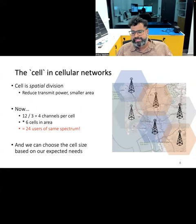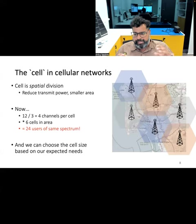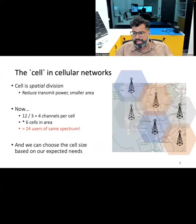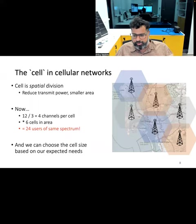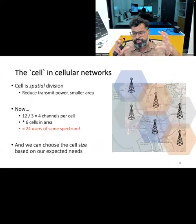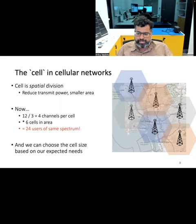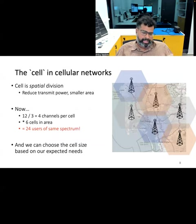Consider another analogy to describe the transition from wide area coverage to cellular networks. Imagine a city's transportation network where initially there is only one large bus that picks up and drops passengers across the city. While it covers a vast area, it is not efficient in terms of time, fuel consumption, and passenger capacity. To address these issues, the city restructures by introducing several smaller buses, each responsible for a specific neighborhood, allowing more targeted and efficient service. Similarly, in telecommunications, cellular networks replaced the large-area coverage approach — the geographical area was divided into smaller cells, each with its own base station (analogous to a bus) to cater to local users. This new structure minimized interference and optimized spectrum usage, leading to an efficient communication system that allowed the number of subscribers to increase to millions.